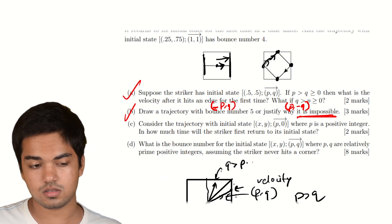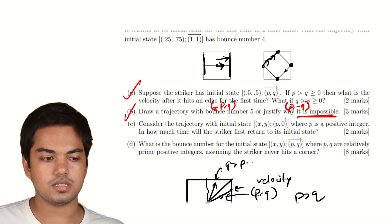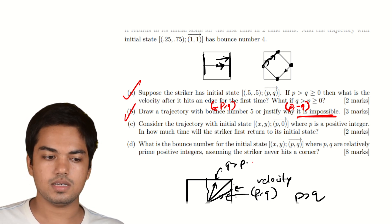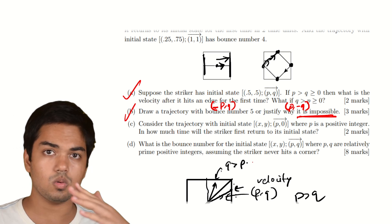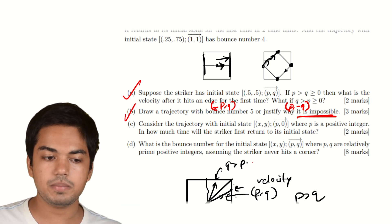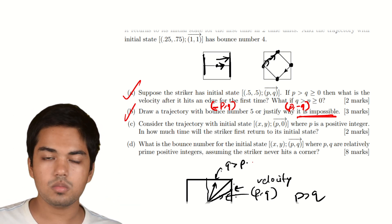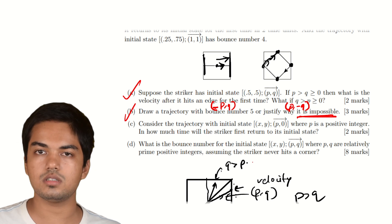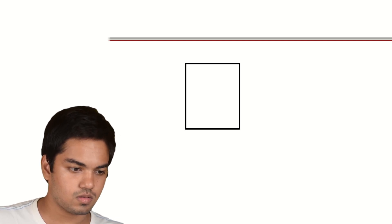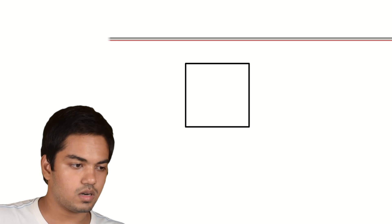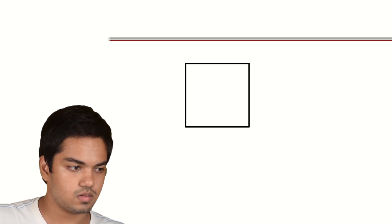Question 3: consider the trajectory with initial state (x, y) and velocity (p, 0) — a purely horizontal velocity with p a positive integer. In how much time will the striker first return to its initial state? Let's draw it out.